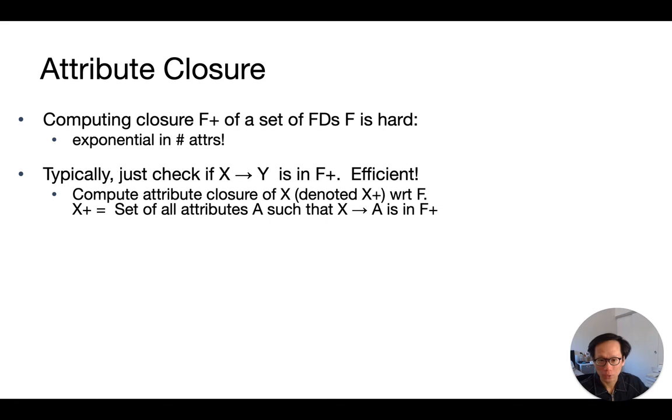So we are going to compute X+ in a relatively simple manner. We initialize X+ to be just X. And then we repeat the following in a loop until there's no change. Sometimes this is also called a fixed point. For U determines V that is in F, if U is in X+ already, then add V to X+. Just keep doing this loop until we have added all the attributes to X+.